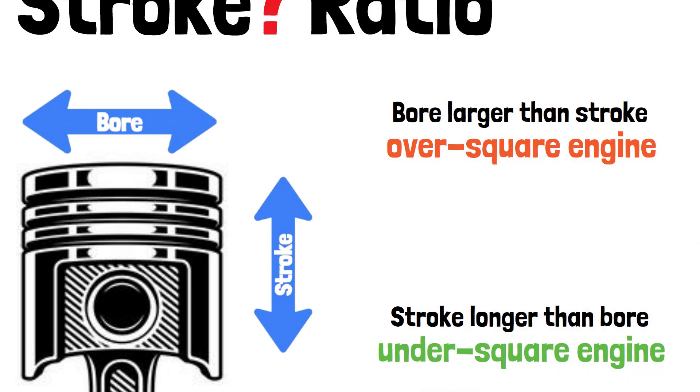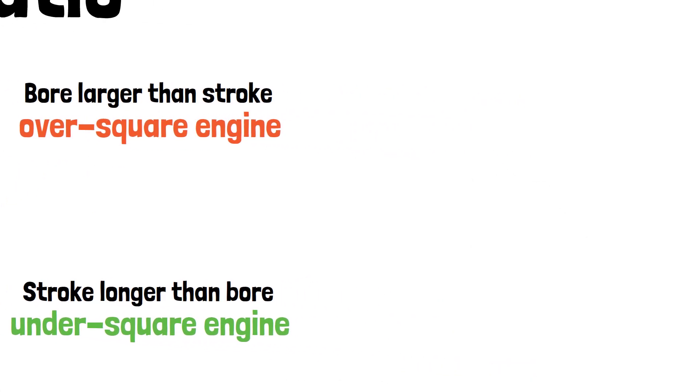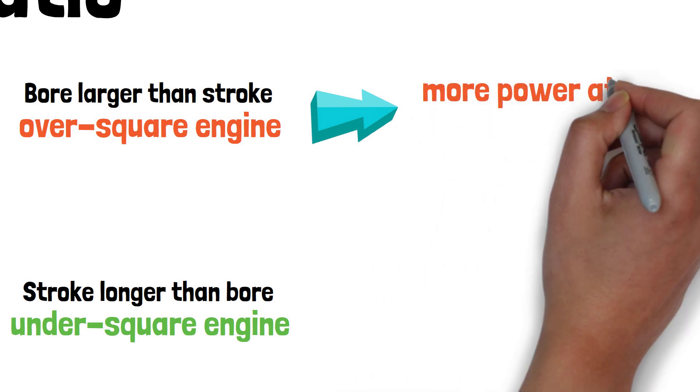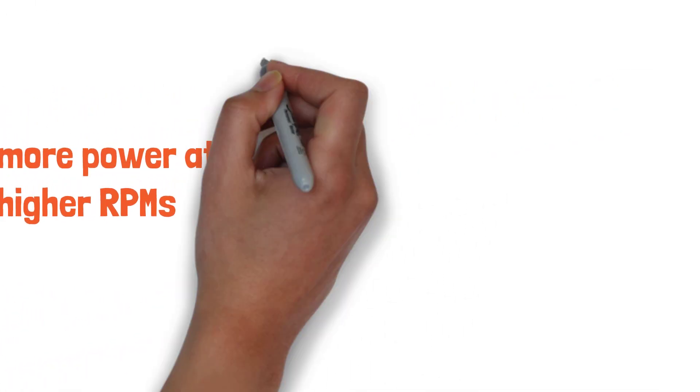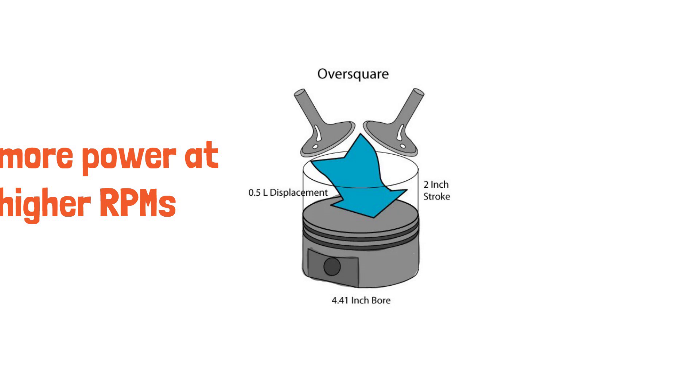So why is this important? Over-square engines usually produce more power at higher RPMs. This is because a larger bore allows bigger valves, which means more air and fuel can enter the cylinder.